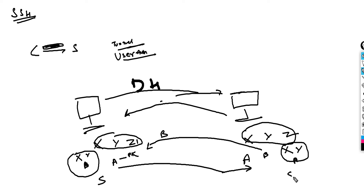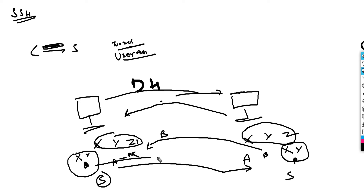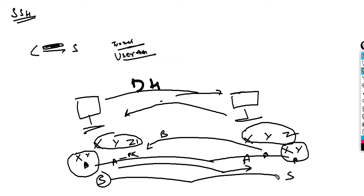Both client and server then run an algorithm on these three pieces of information they each have and arrive at a common session key — let's call it s. This is essentially what symmetric encryption means. This session key s is then used to encrypt all data flowing through the tunnel, which is basically encrypting the tunnel. This session key is what SSH uses for encryption.